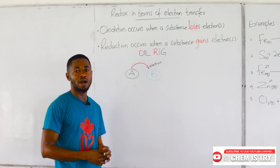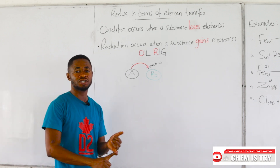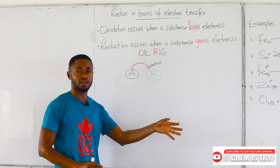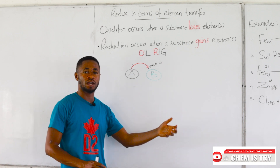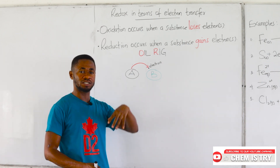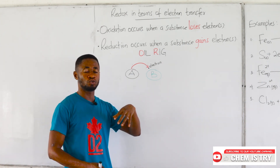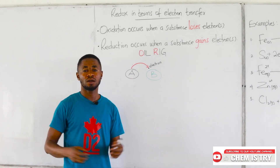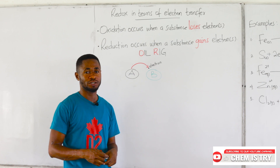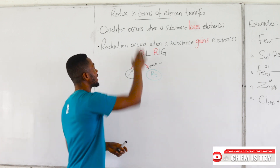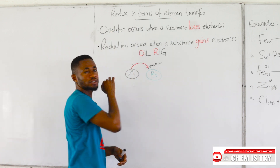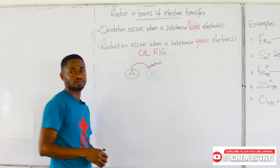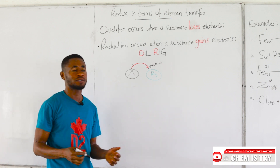We've already talked about the definition for reduction and oxidation in terms of oxygen transfer. We said that oxidation is the addition of oxygen into a substance, and reduction is the removal of oxygen from a substance. Now we want to look at the second definition for redox — redox in terms of electron transfer.